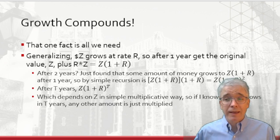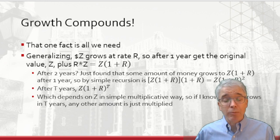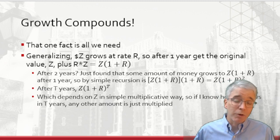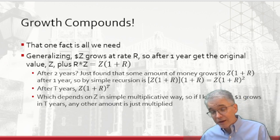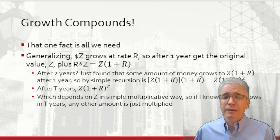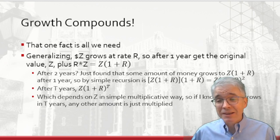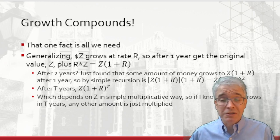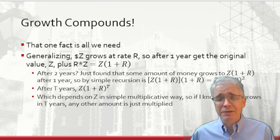After two years I do that recursively — I put in Z times (1 + r) as the new Z value. So after two years I have Z times (1 + r) times (1 + r), which is Z times (1 + r) squared. Do that a few more times and there's a clear pattern: after t years I have Z times (1 + r) to the t power. After 10 years, put in t = 10; after 15 years, put in t = 15.